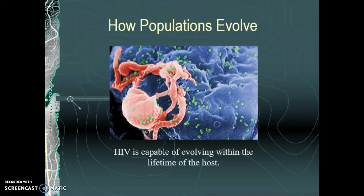We're going to start talking about how populations evolve. In the first lecture, we went through evolution — what it is, Darwin, Cuvier, Lamarck, and different people involved. More importantly, we covered the lines of evidence for evolution: the fossil record, anatomy, molecular data, and biogeography. All those things support evolution.